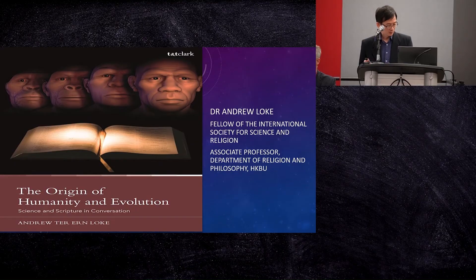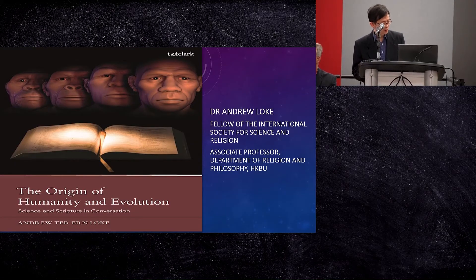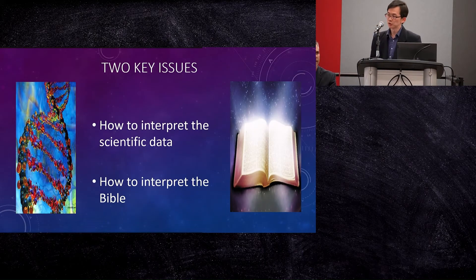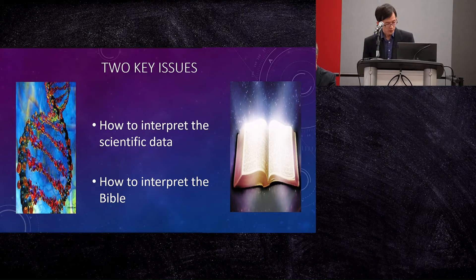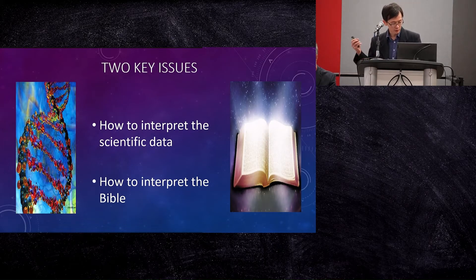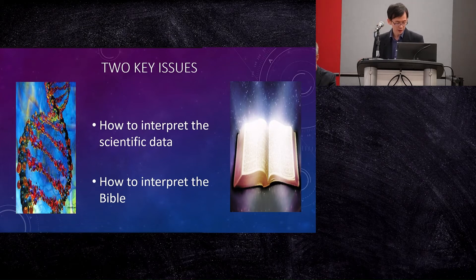Today I'm going to present from my book, The Origin of Humanity and Evolution. There are two key issues which we need to address: one is how to interpret the scientific data, and how to interpret the Bible. Dr. Craig, Kenton, and Josh Swamidass have already said something about the scientific data — I would highly recommend Swamidass's work on this issue.